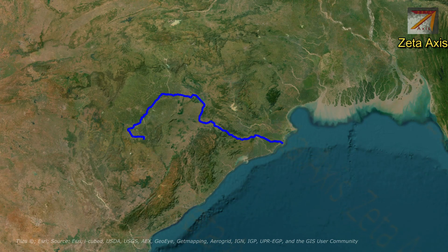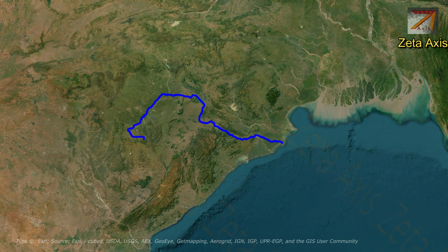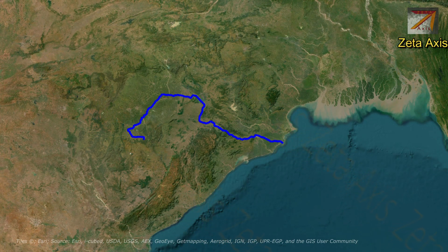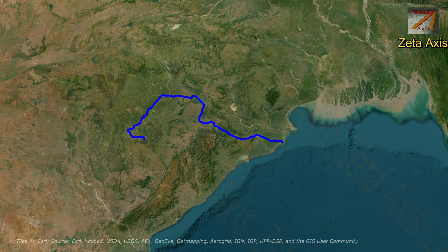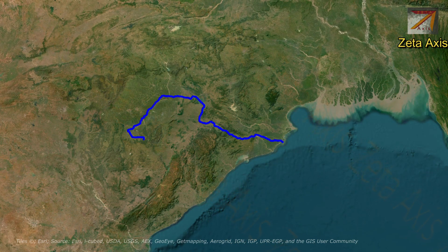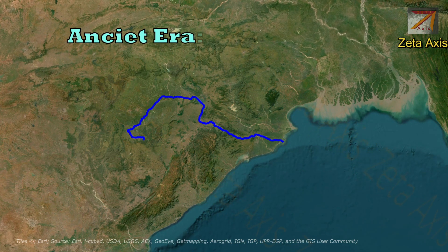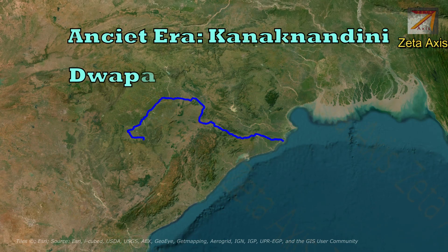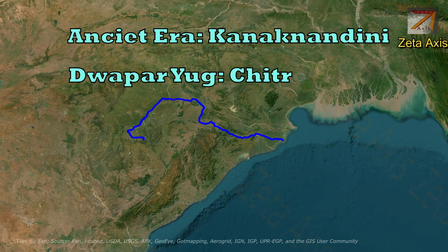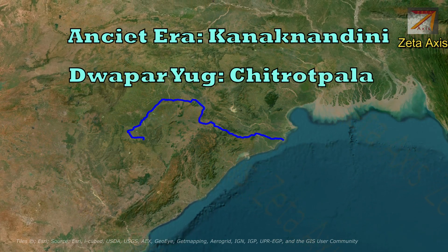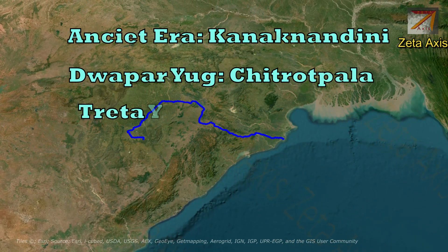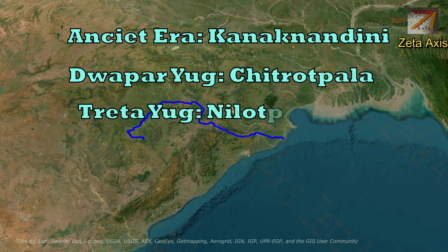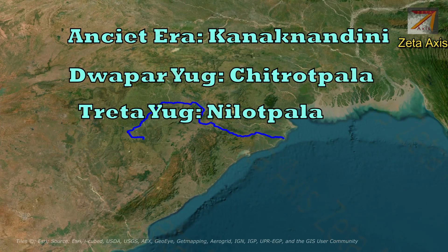The word Mahanadi itself means Great River. Mahanadi River in ancient era was called Kanaknandini. During Dwapar Yuga, it was called Chitrotpala, while in Tarithar Yuga, it was called Nilotpala.